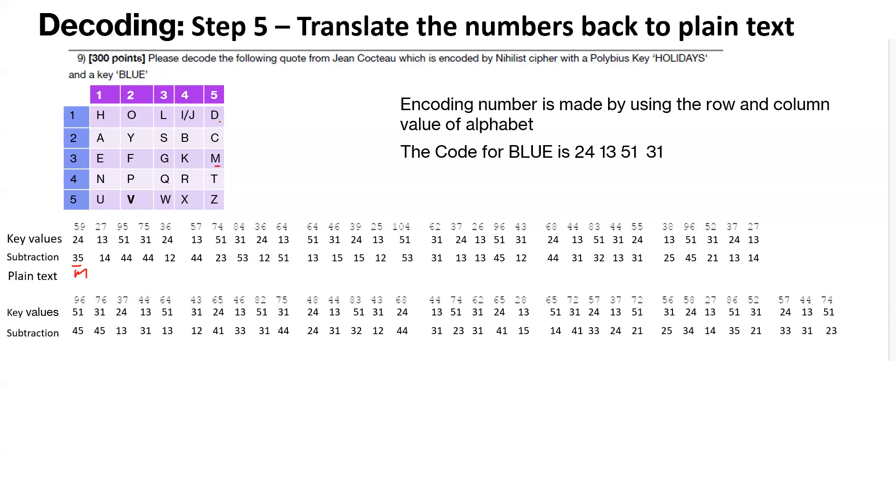So 14 is first row and fourth column. So it could be I or J. Either of them. Probably I makes more sense out here. So we go ahead, use the 5x5 grid we created using the polybius key, and we start translating those values or decoding those numeric values back to the alphabets.